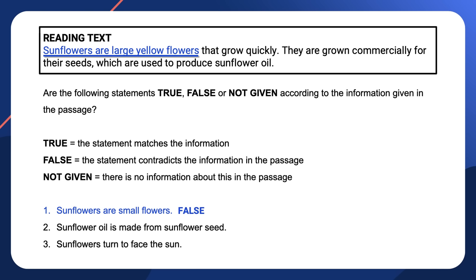Question two is true — the information in the statement matches the information in the passage, although it uses different words. 'Sunflower oil is made from sunflower seeds' means the same as 'seeds are used to produce sunflower oil.' Question three says that sunflowers turn to face the sun. This may or may not be true, but there is no information in the text about this — it is not given. If you find the phrase 'not given' confusing, think of it as 'it doesn't say.'